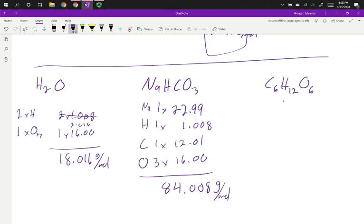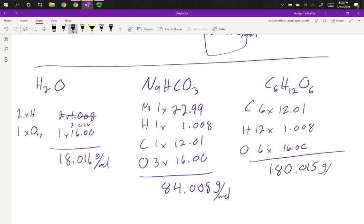And then the final one. I have carbon, 6 times carbon at 12.01. I have hydrogen, 12 times hydrogen at 1.008. And oxygen, I have 6 times 16.00. This should come out about 180.015-ish grams per mole.